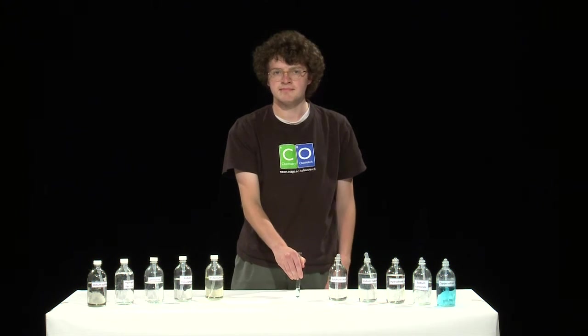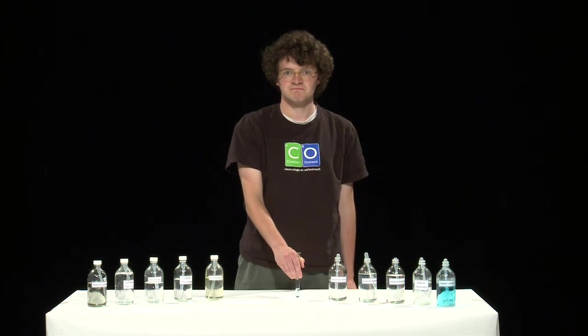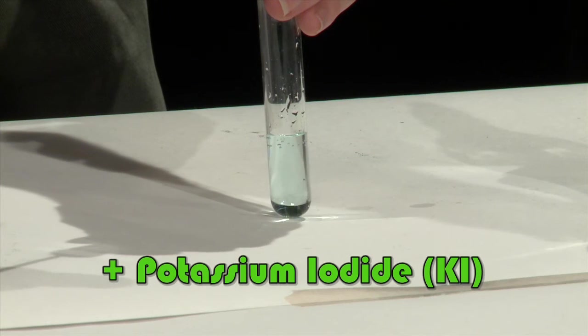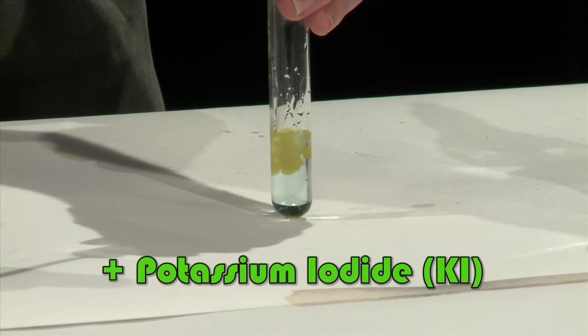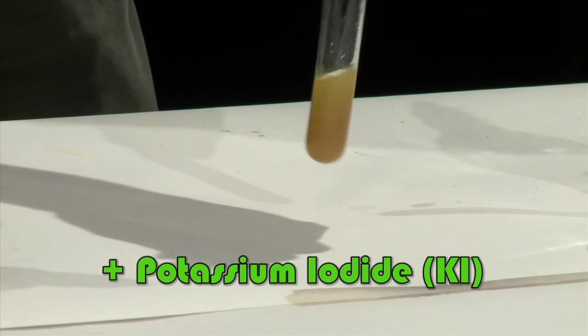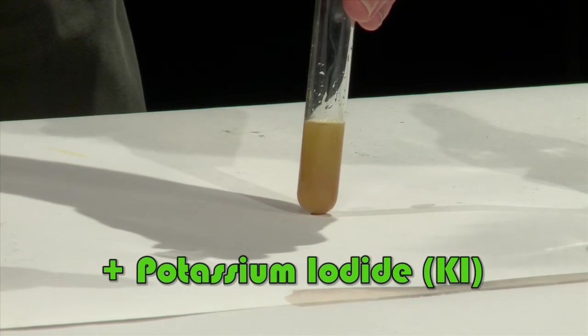Now this is where the really interesting chemistry begins. Add 5 drops of potassium iodide. A white precipitate of copper iodide is formed, as well as a brown solution of iodine.